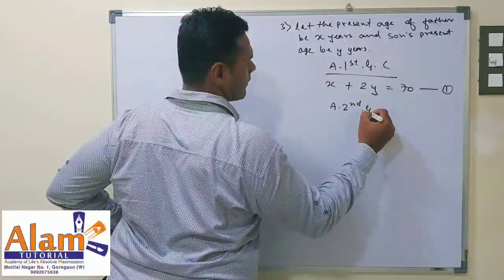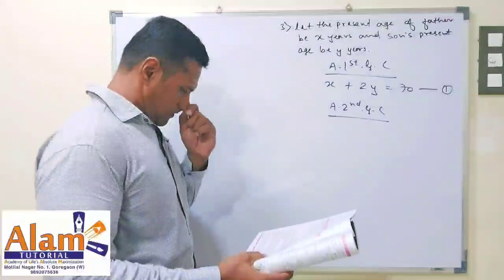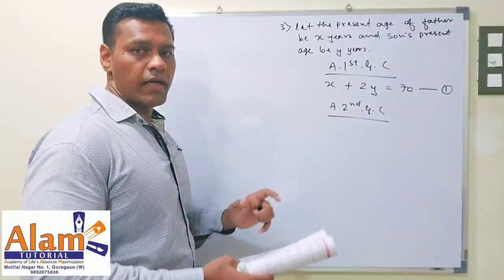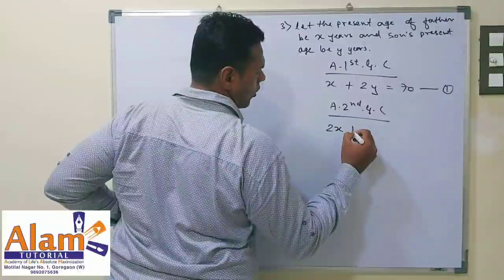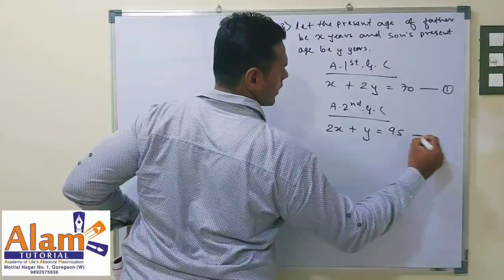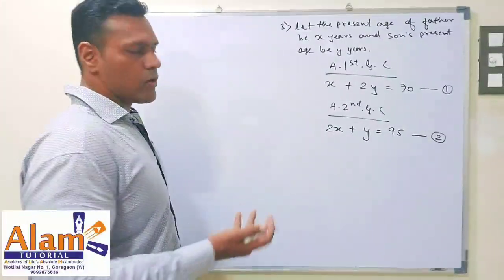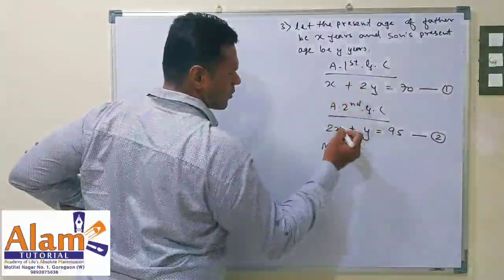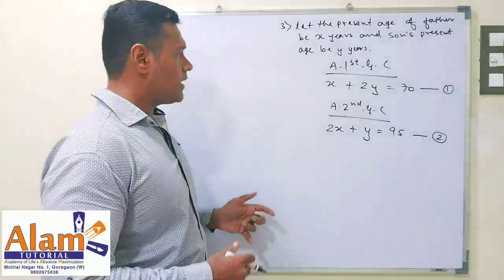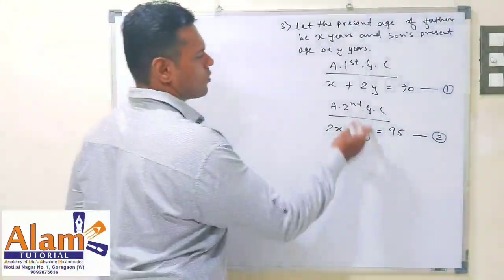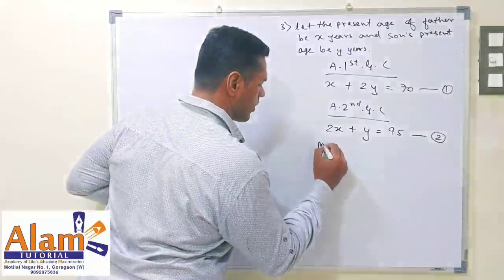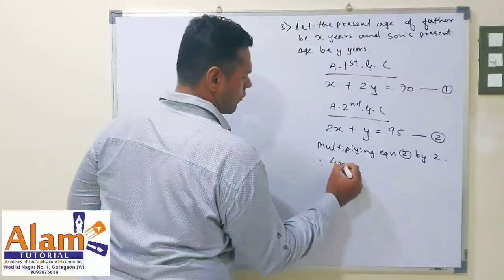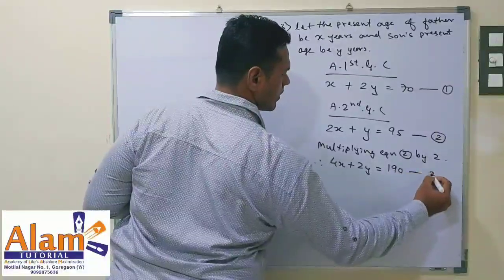According to the second given condition: if we double the father's age and add the son's age, the sum is 95. So 2x plus y is equal to 95. To eliminate y, we multiply this equation by 2, giving 4x plus 2y is equal to 190. This is equation 3.